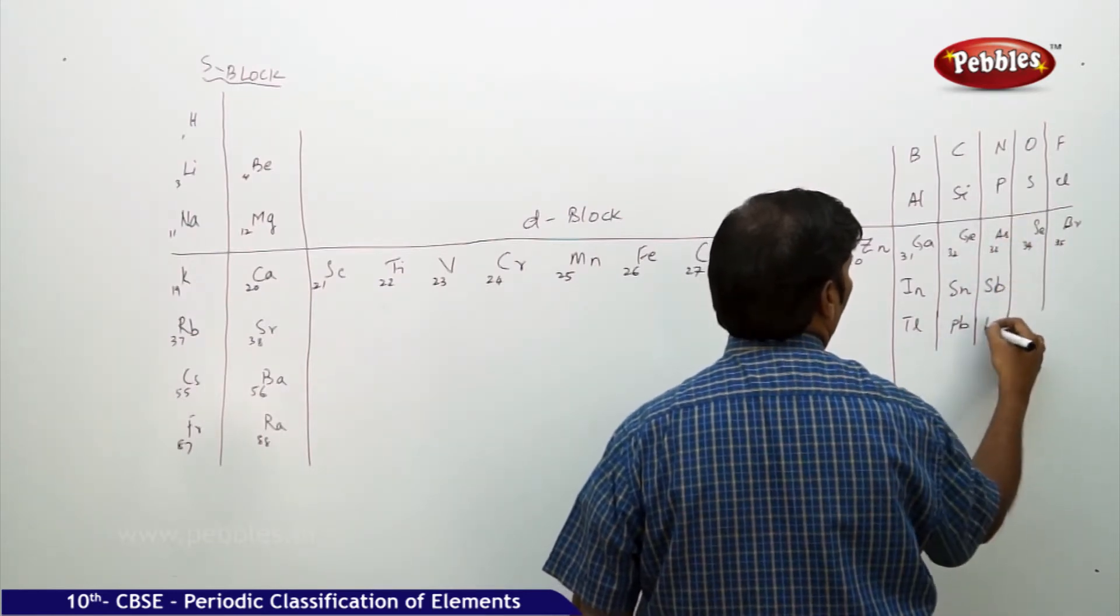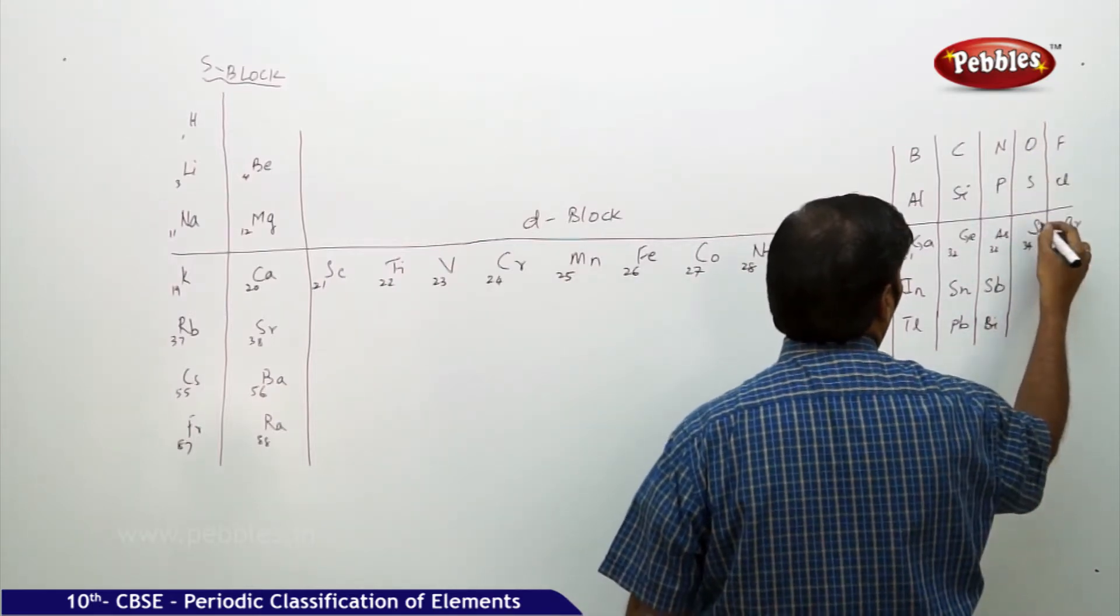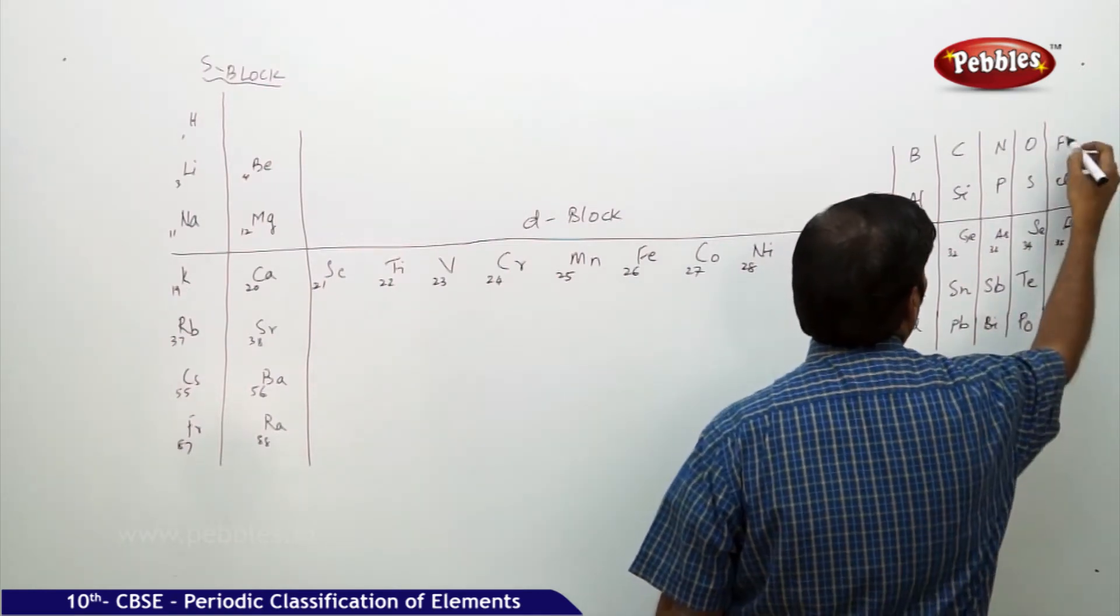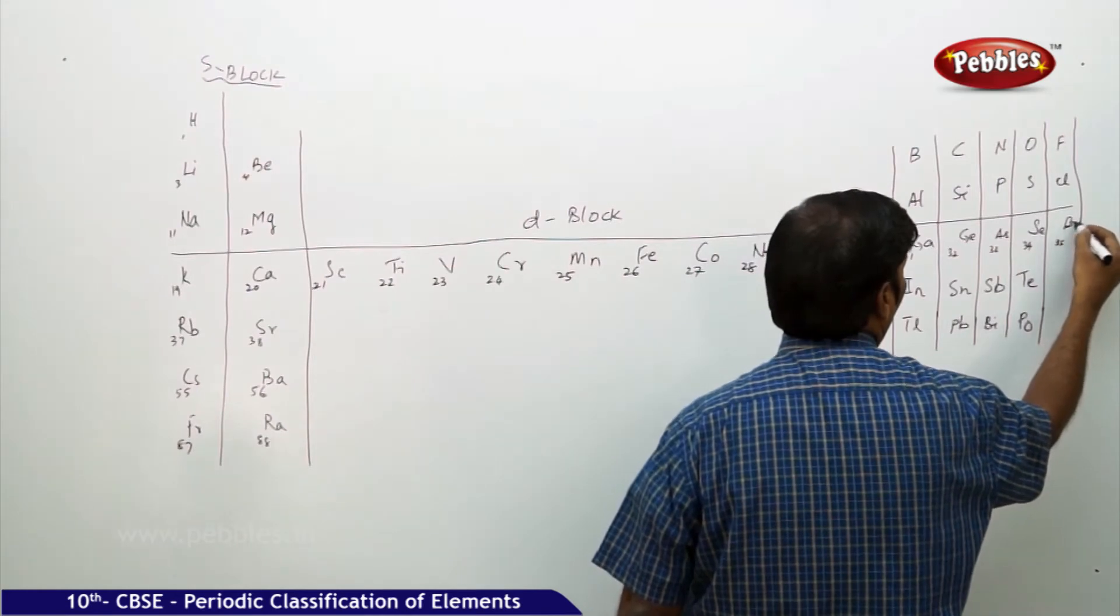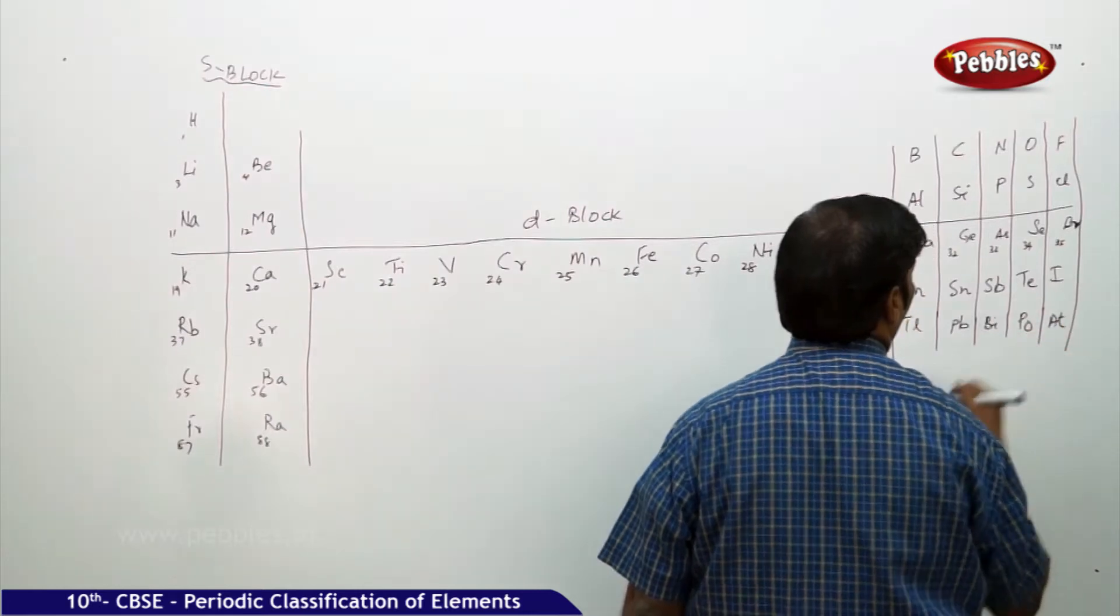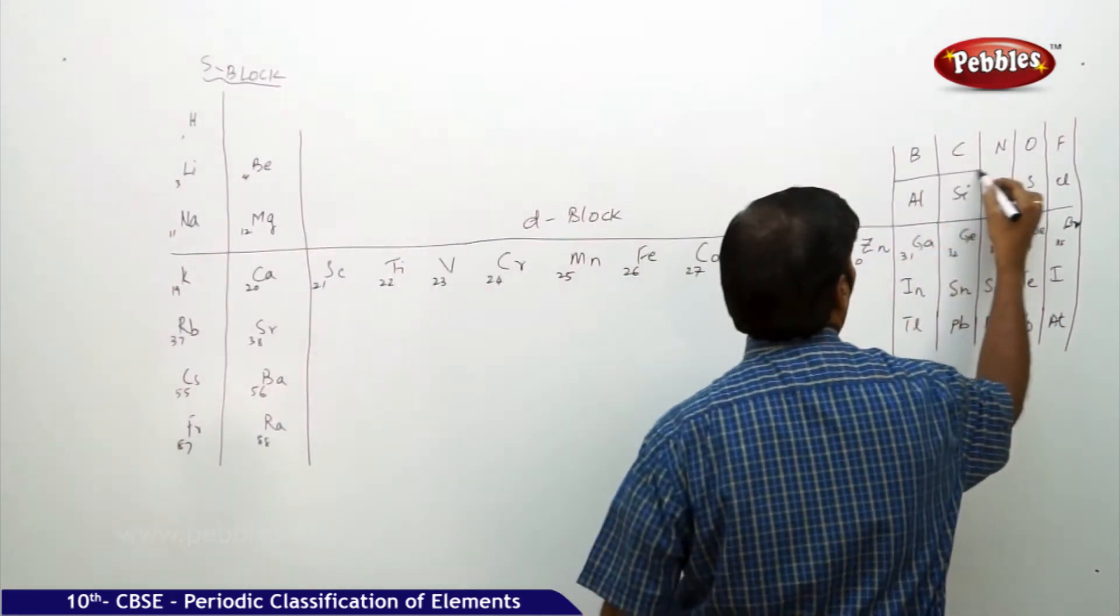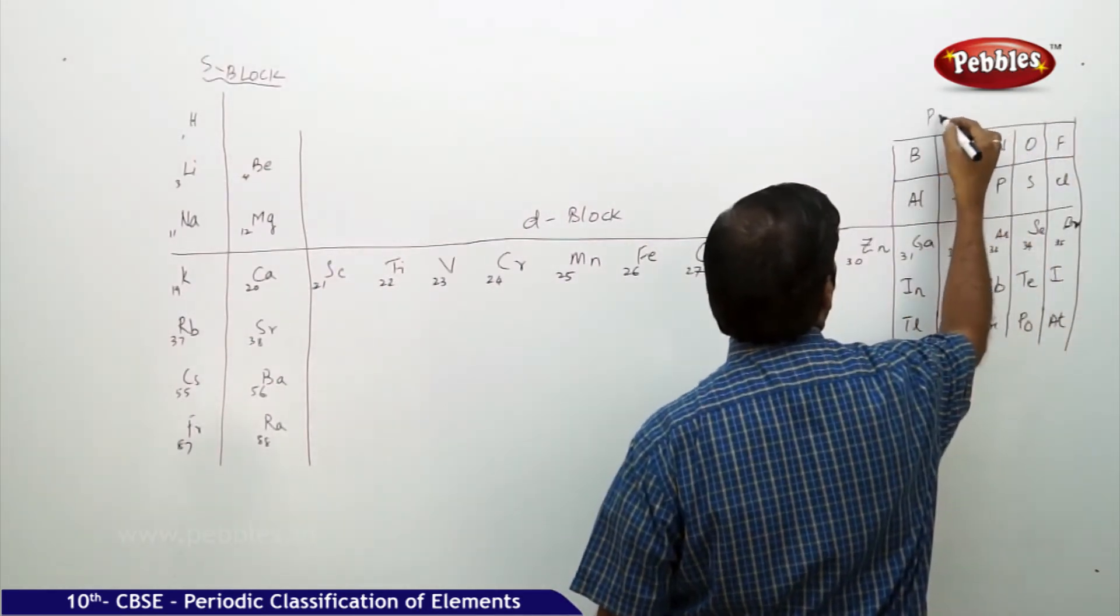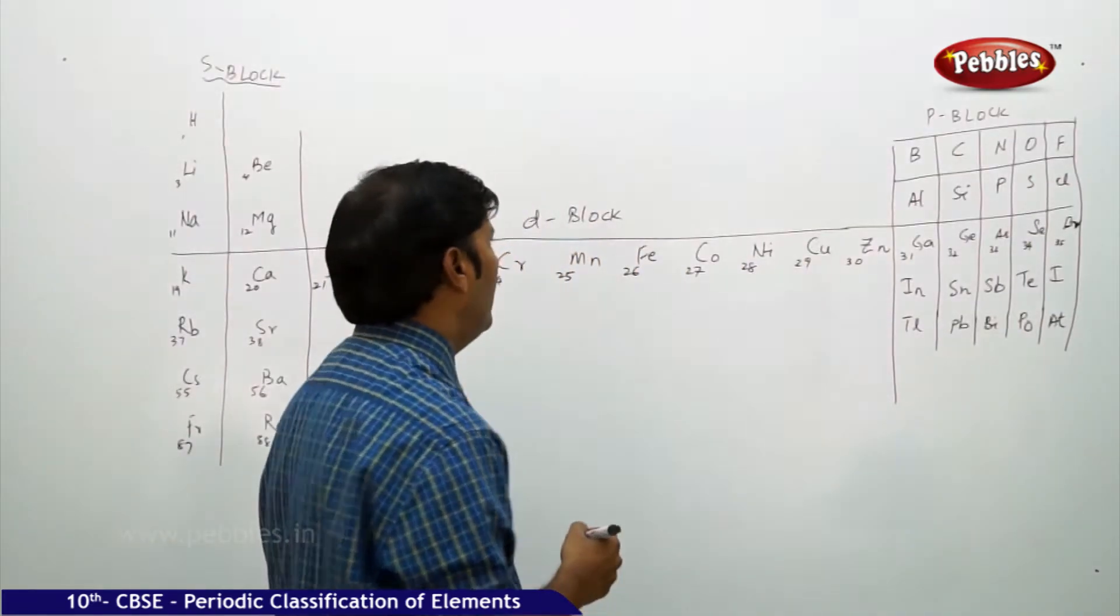Oxygen sulfur selenium, fluorine chlorine bromine. Boron aluminum gallium indium and thallium, carbon silicon germanium tin and lead, nitrogen phosphorus arsenic antimony and bismuth, oxygen sulfur selenium tellurium and polonium, fluorine chlorine bromine iodine and astatine. All this comes under P block.